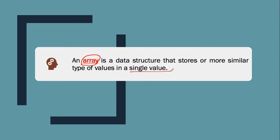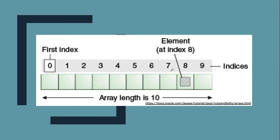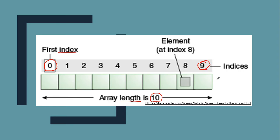For you to understand more about the definition, it's better to have this kind of illustration. So the array will look like this. First we need to check what is our array size. Based on this illustration, our array size or the length of our array is 10, meaning it can contain 10 values. Array by default starts with 0 — that is the index. The first index is 0 and it ends with 9.